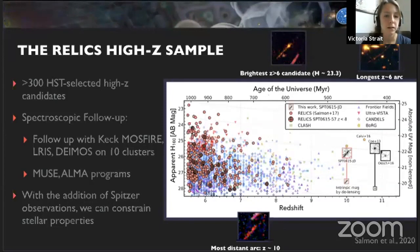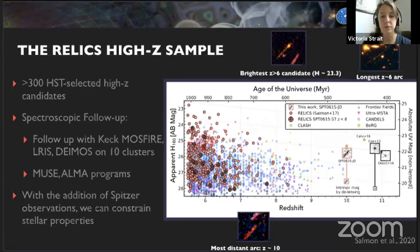There are also a lot of spectroscopic follow-up programs going on for the RELICS sample. In particular, my group in Davis is looking at these with Keck, generally searching for one emission line — Lyman alpha — which gives us a redshift. But even when we know a redshift, we need something else to say anything about the physical properties of the galaxy. We need to constrain the rest-frame optical part of the spectrum, and we can only basically do this with Spitzer right now for high-redshift galaxies.